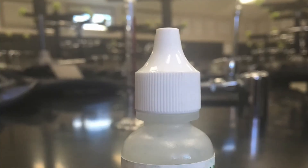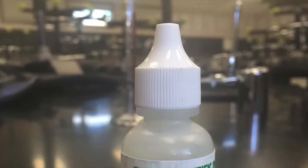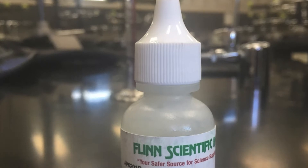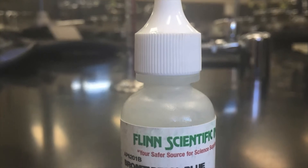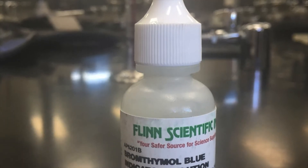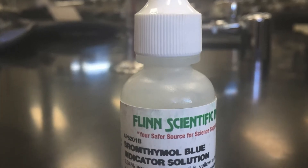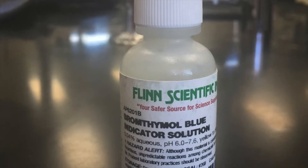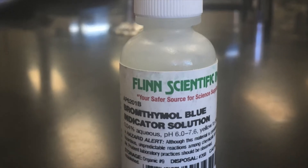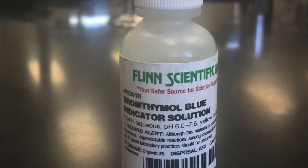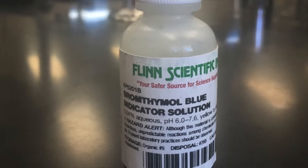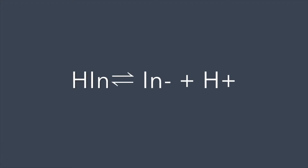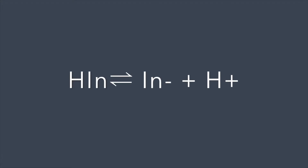In this lab, we use the indicator bromothymol blue to determine the pH of the solution and how it changes during this reaction. An indicator is a dye that can gain or lose hydrogen ions in order to form substances that have different colors. The reaction is as shown.